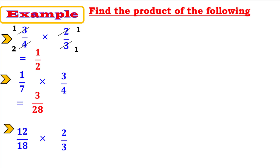Next: 12 over 18 times 2 over 3. The fraction 12 over 18 is not in simplest form. We can simplify it by dividing by 6: divided by 6 equals 2, divided by 6 equals 3. Now multiply the remaining factors: 2 times 2 equals 4, over 3 times 3 equals 9. So the product is 4 over 9.